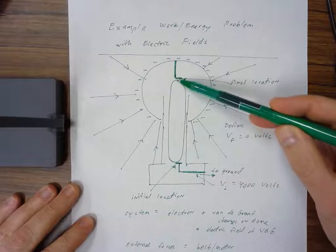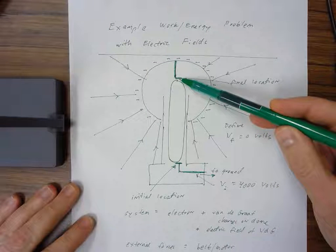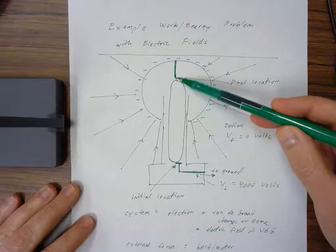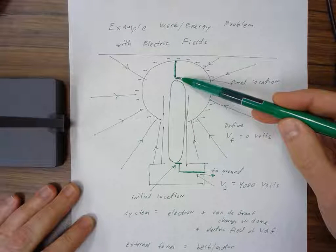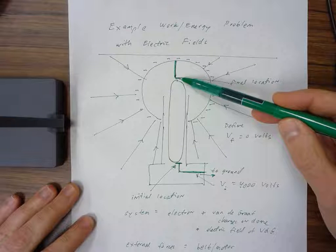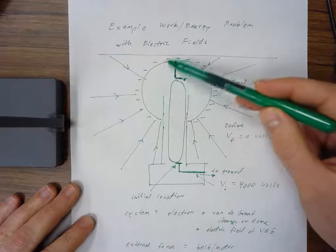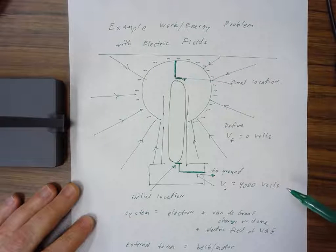The belt turns around and carries that charge up to this terminal where it drops it off. Once the charge is there, it spreads out more or less evenly over the entire surface of the conducting dome.